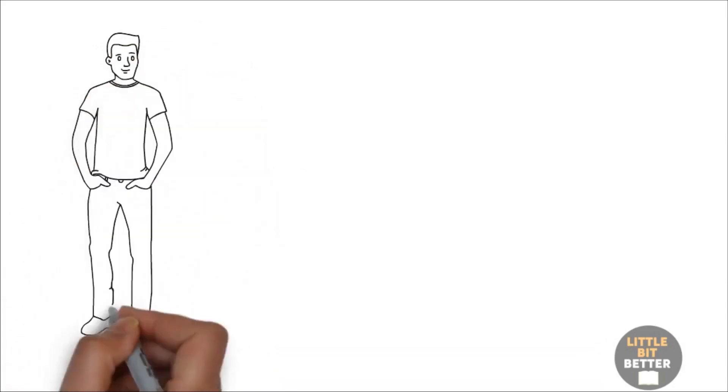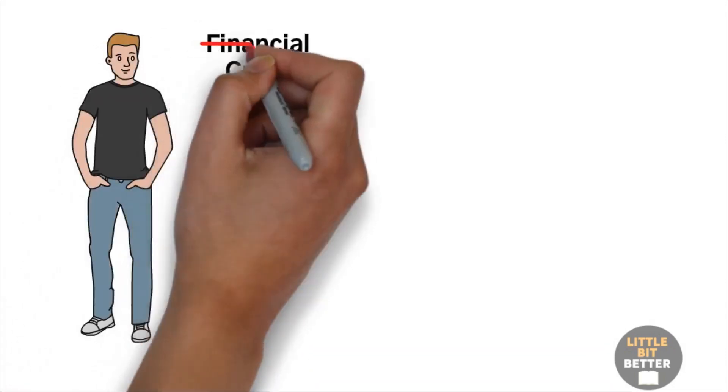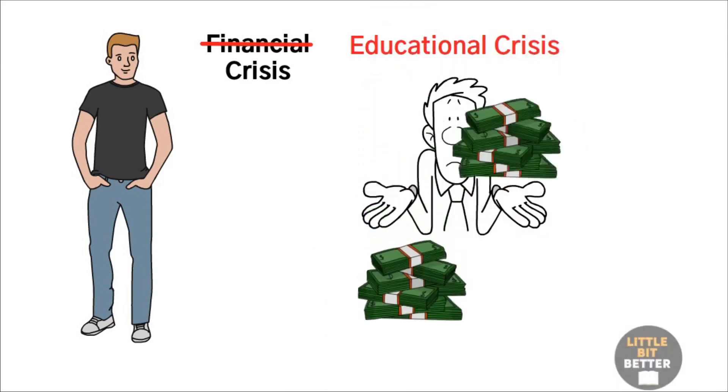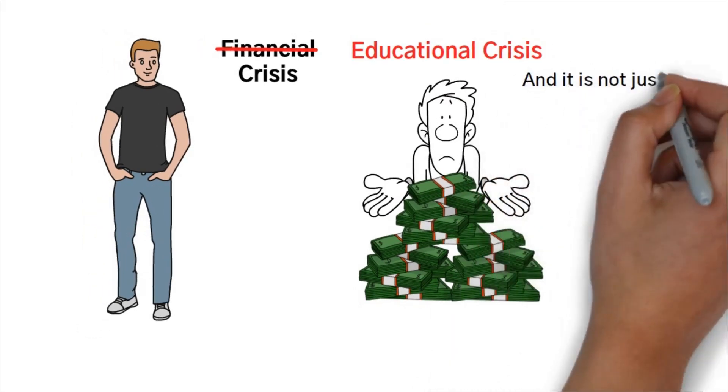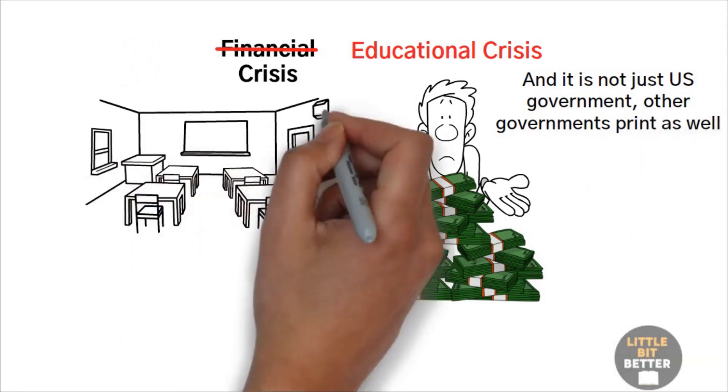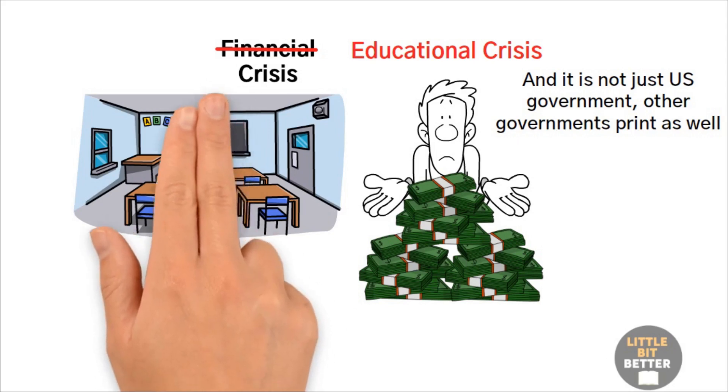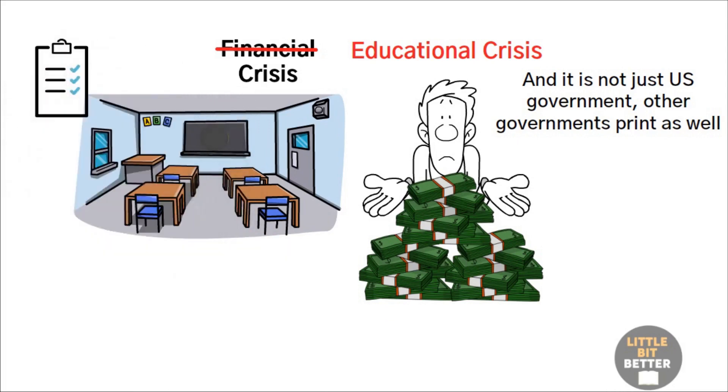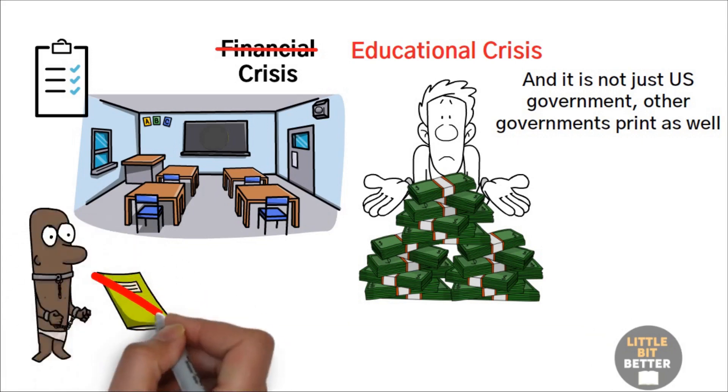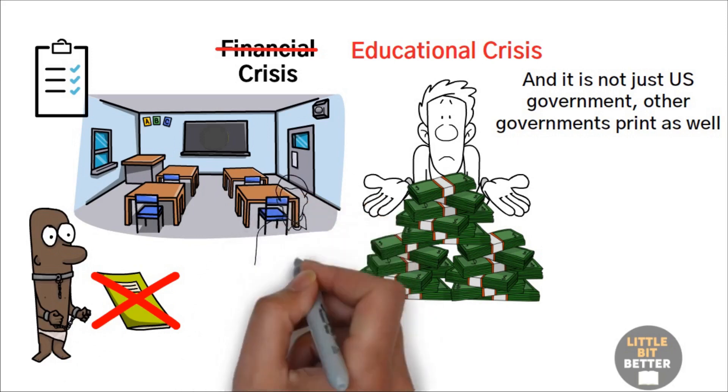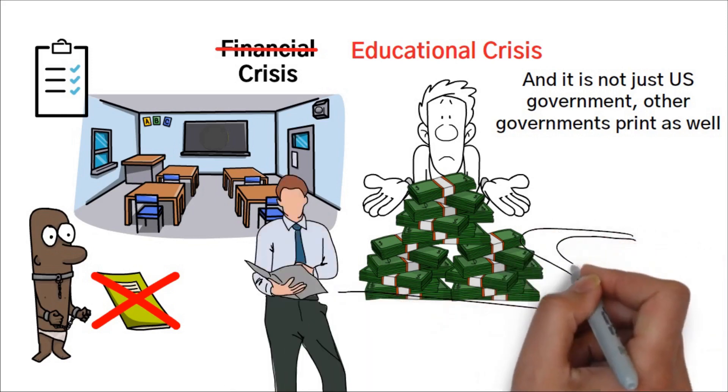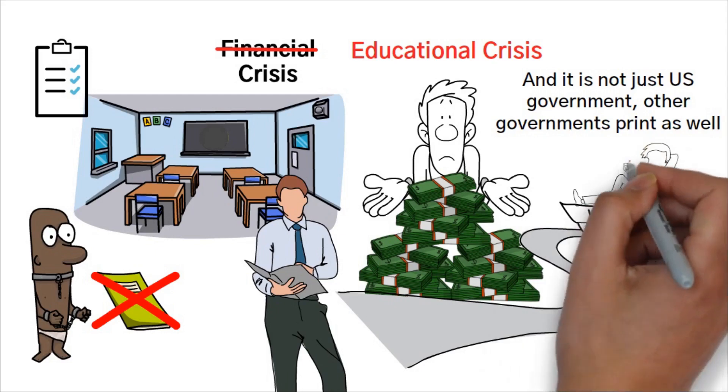According to Kiyosaki, what we are experiencing currently is not a financial crisis. It is an educational crisis. People don't understand what is happening, and that is how governments can get away with printing money. And it is not just the U.S. government. Other governments print as well. The fact that we don't learn anything about money in school is not a mistake or an accident. It is part of the plan. In the past, they did not allow slaves to read and write because they were afraid that slaves would start demanding their rights. Government directs us to a certain direction, and that direction is not designed to benefit the average person. It is designed to benefit Wall Street and the ultra-rich.